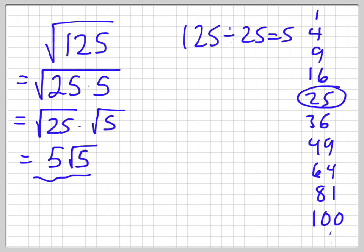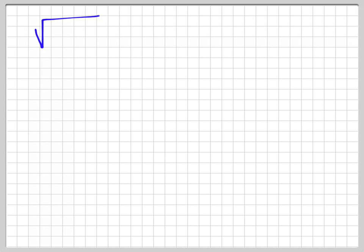So we took this 125 and reduced it down into 5√5. So we made what's underneath the radicand a smaller number. So let me just try another question. Let's try √96.